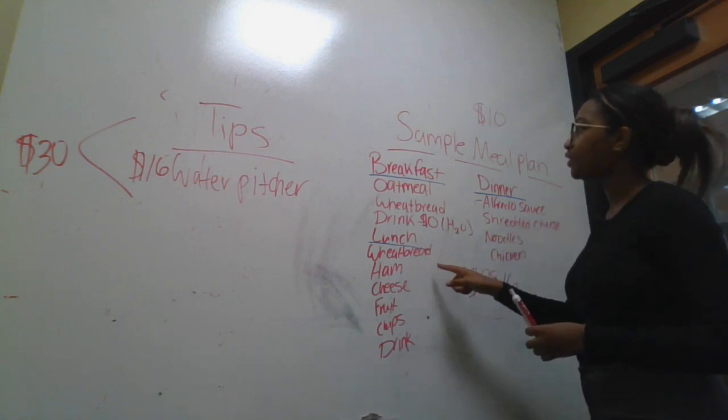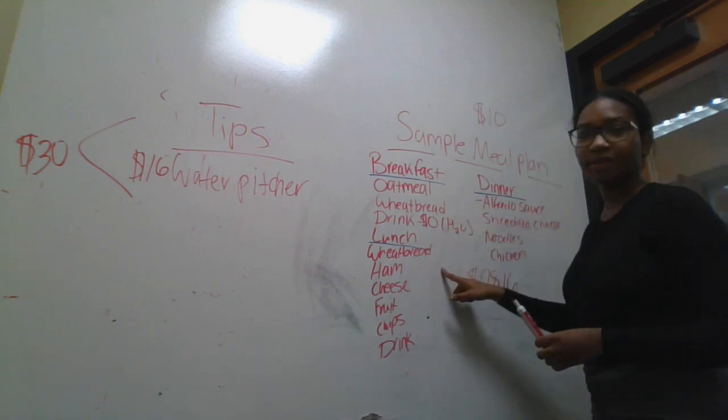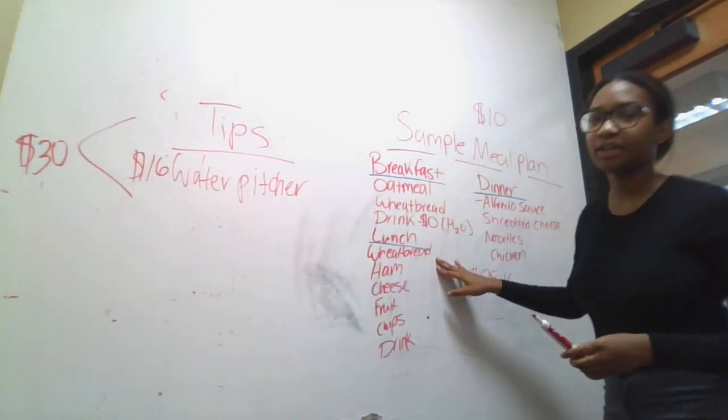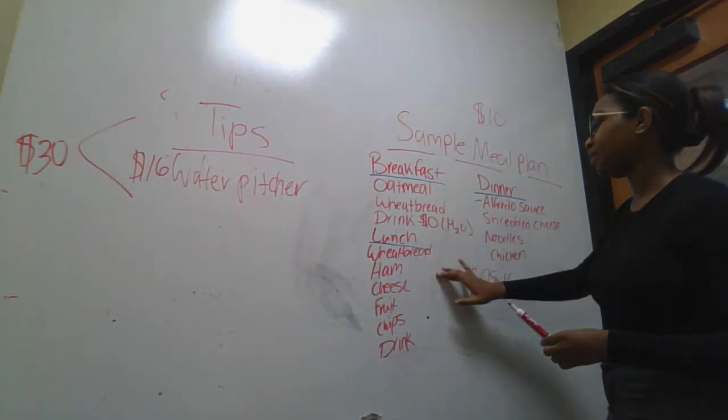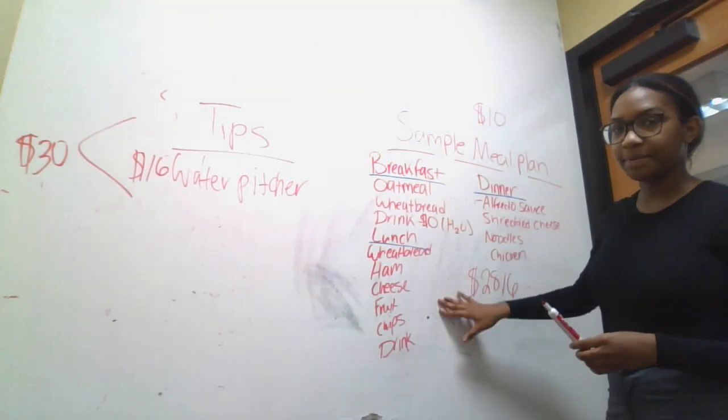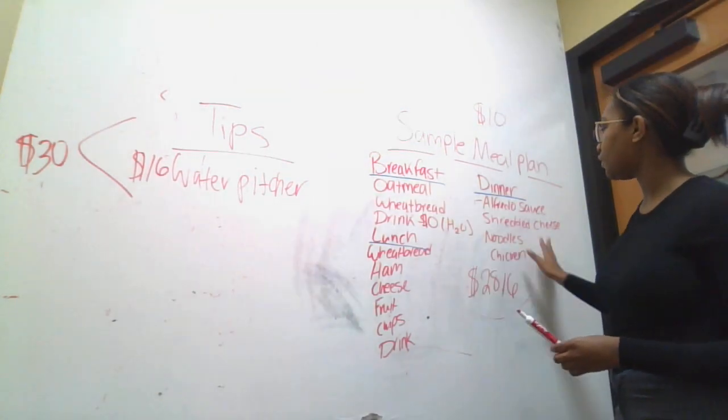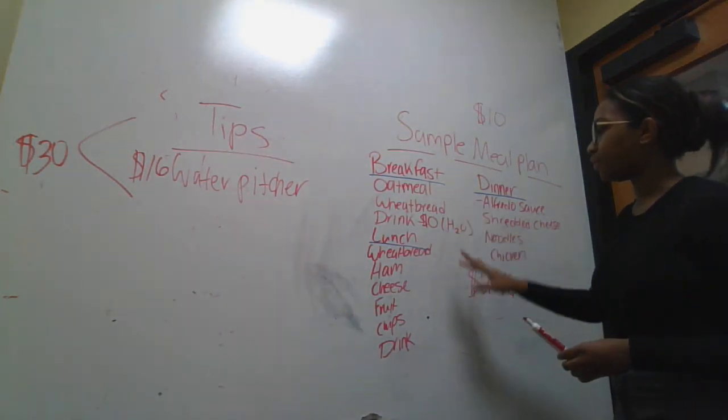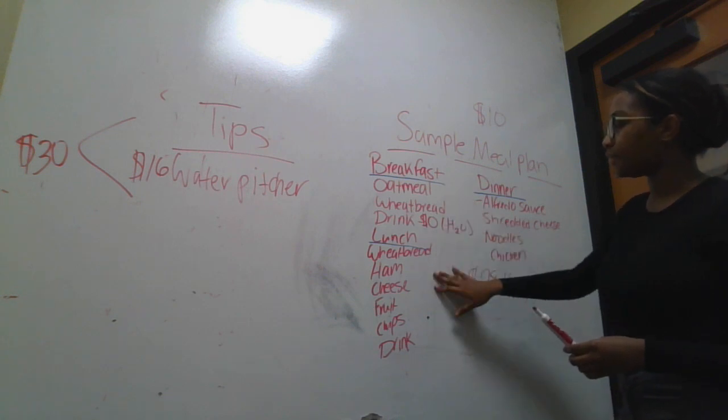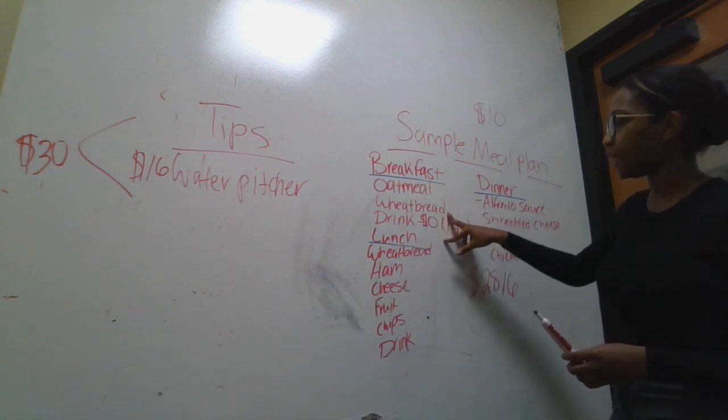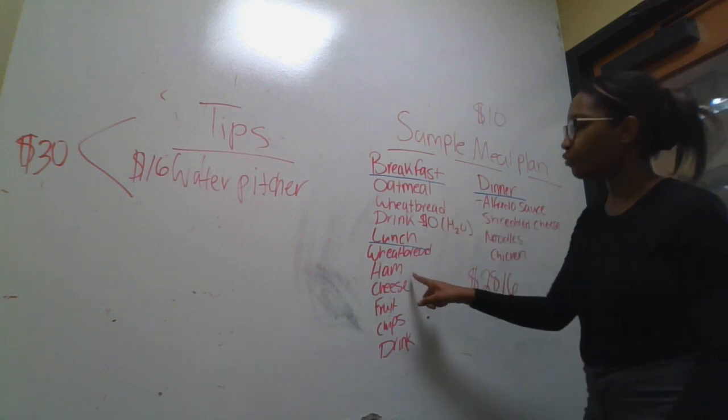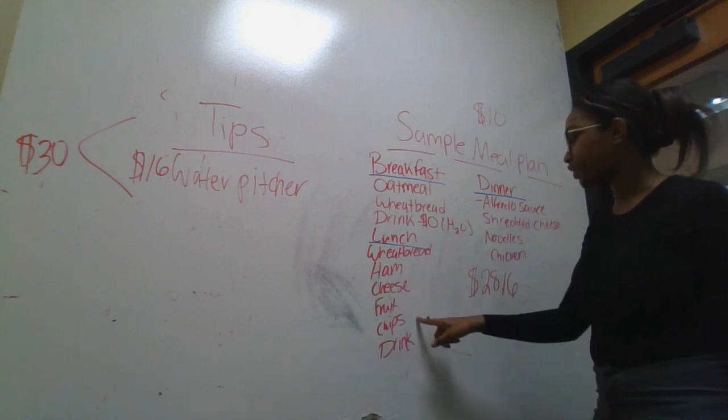So, we can also take that wheat bread. Also, y'all think about that when y'all do your assignment. Think about what are ways that I can utilize the same ingredients for other meals. So, we have wheat bread here twice. We have ham, cheese, fruit, chips, and a drink.